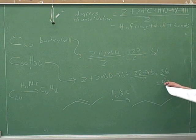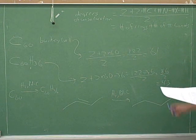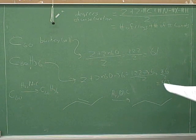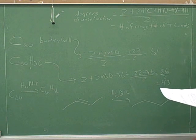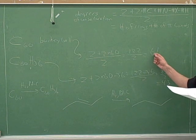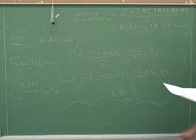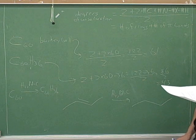So, if we lost degrees of unsaturation here, it's only from the pi bonds. So, what did we conclude? How many pi bonds did the buckyball have? 61. It had 61 degrees of unsaturation, but part of those was rings, and part of that was pi bonds.